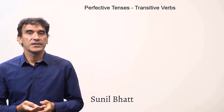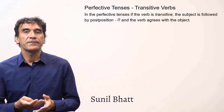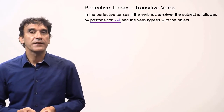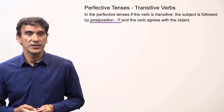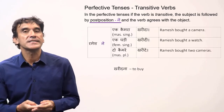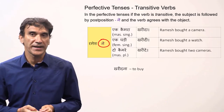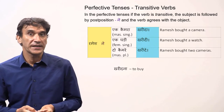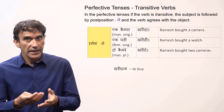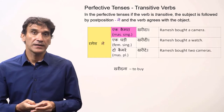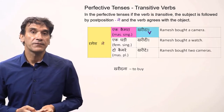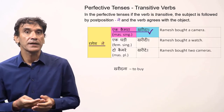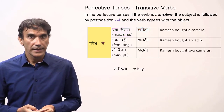In the perfective tenses of transitive verbs, the subject is followed by the postposition 'ne' and the verb agrees with the object in number and gender. In this table, the subject Ramesh has the postposition 'ne' and the verb 'kharidna' takes the form of the object. In the first sentence, the object is 'camera' — masculine singular — so the verb is also masculine singular: 'kharida'. So: Ramesh ne ek camera kharida — Ramesh bought a camera.